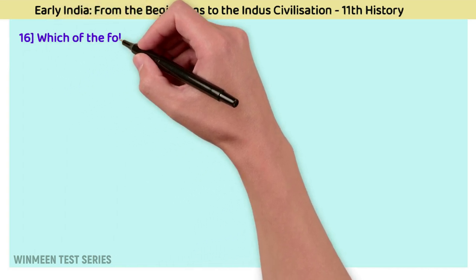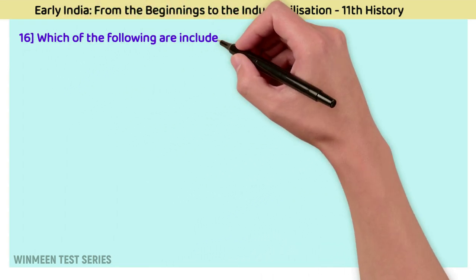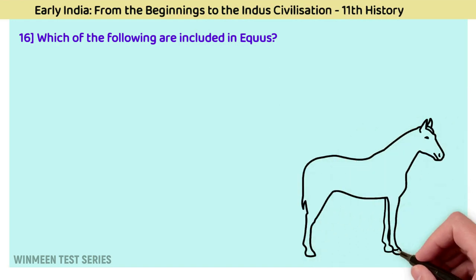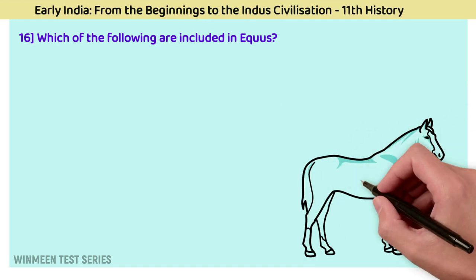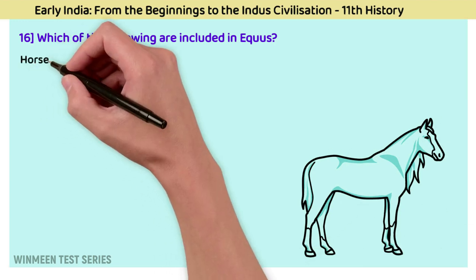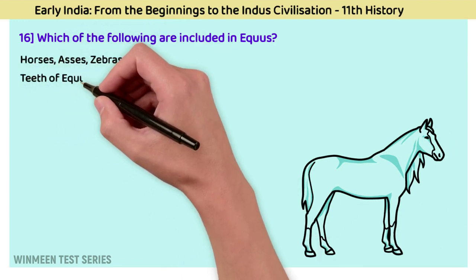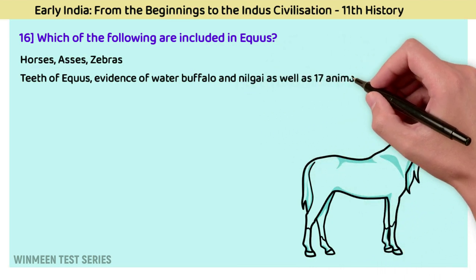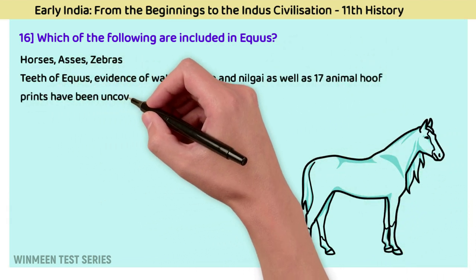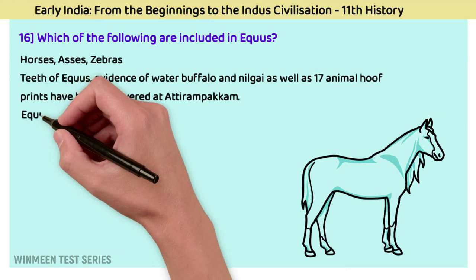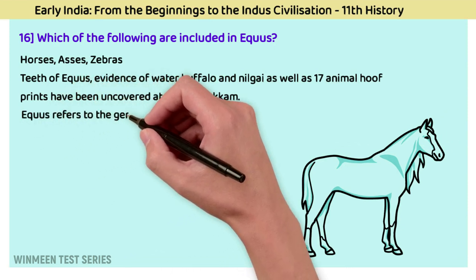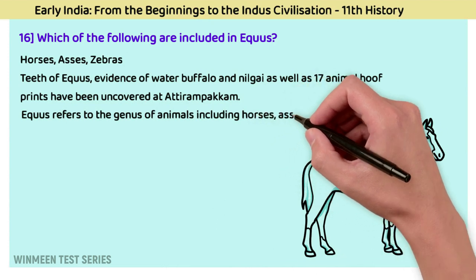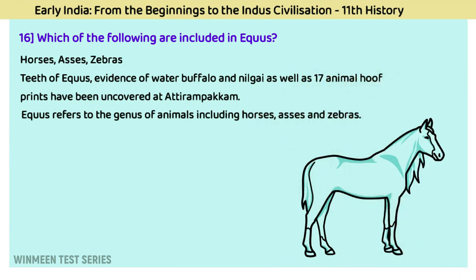Question 16: Which of the following are included in the genus Equus? The answer is horses, asses, and zebras. Teeth of equids, evidence of water buffalo, nilgai, and 17 other animal hoof prints have been uncovered at Attirambakkam. Equus refers to the genus of animals including horses, asses, and zebras.